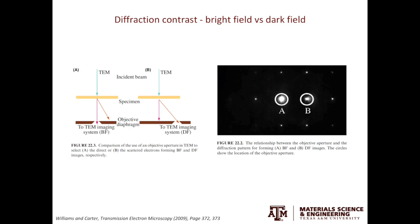If you only use the direct beam A to form the image, it will be a bright field TEM image. If you use the diffracted beam B to form the image, it will be a dark field image. We have discussed how to form proper dark field images in video 9.2, and we'll discuss more on this topic when we introduce the weak beam dark field technique.